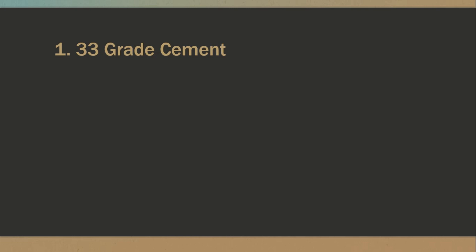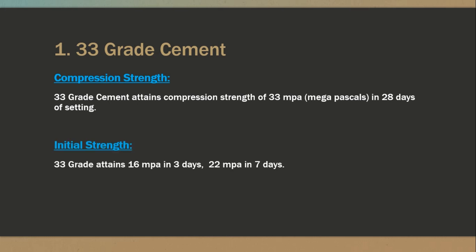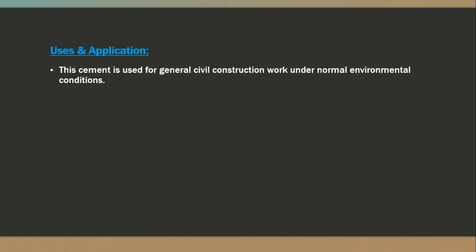First, 33 grade cement: it attains a compressive strength of 33 MPa in 28 days of setting. For initial strength, 33 grade attains 16 MPa in 3 days and 22 MPa in 7 days. This cement is used for general civil works under normal environmental conditions.